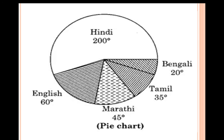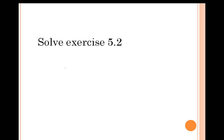When drawing the pie chart, note that the protractor only shows up to 180 degrees. For Hindi at 200 degrees, mark 180 degrees first, then measure an additional 20 degrees beyond that point to get 200 degrees total. Try to draw this pie chart yourself. If you have any queries, you can ask me. Try to solve all of Exercise 5.2 in your notebook. Have a good day.